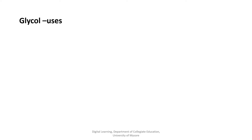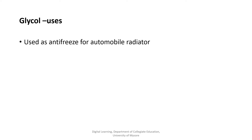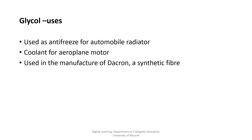Here are some of the uses of glycol. Glycol has a number of applications or uses. It is used as antifreeze for automobile radiators, which prevents the freezing of water in car radiators. It is also used as a cooling agent in airplane motors, and in the manufacture of dacron, which is a synthetic fiber. Glycol is also used as a solvent for stamp inks.